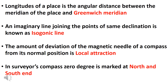An imaginary line joining the points of same declination is known as an isogonic line. The amount of deviation of the magnetic needle of a compass from its normal position is called local attraction.